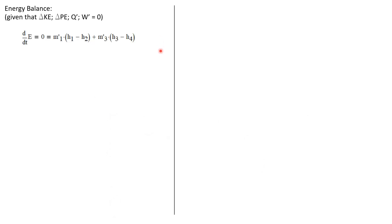Let's write an energy balance. We'll recall that the ΔKE is zero, ΔPE is zero, Q̇ is zero, Ẇ is zero. And so we're left with just the mass flow rates times change in enthalpies. Now there are two mass flow rates in this energy balance. So we can write dE/dt is zero because it's operating at steady state. It's the mass flow rate at the inlet of the oil times the change in enthalpy for the oil plus the mass flow rate for the water times the change in enthalpy for the water.